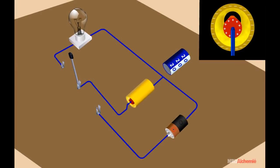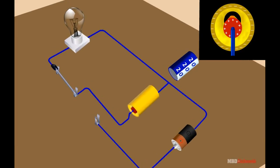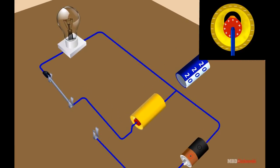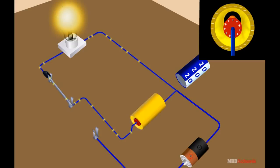When a charged capacitor is connected in the circuit, the stored energy in the form of charge flows from the capacitor into the circuit and makes the bulb glow.